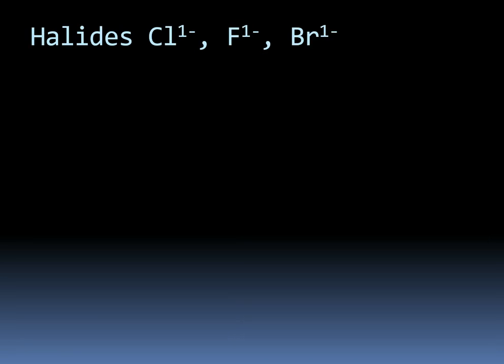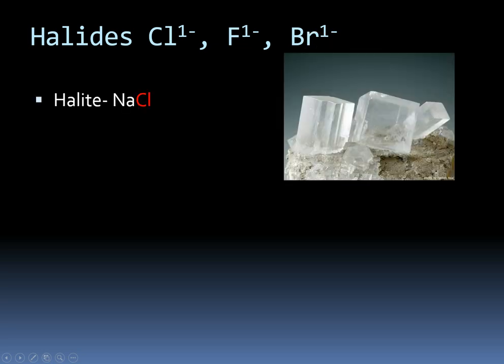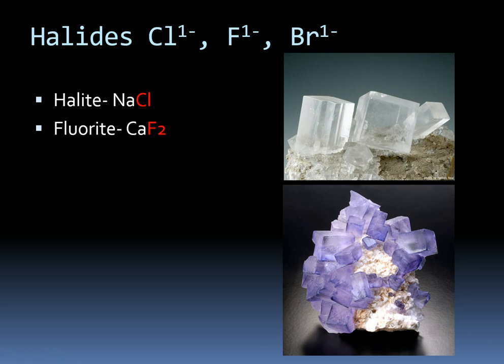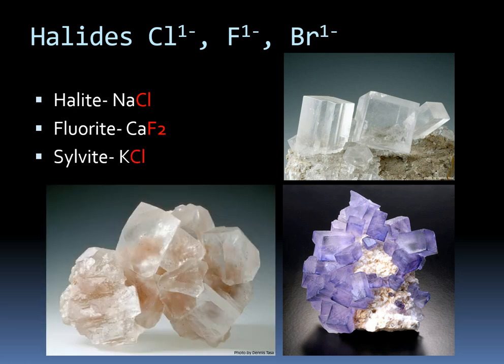We also have the halides, recognized by the presence of a halogen ion — elements like chlorine, fluorine, or bromine. Halite is sodium chloride; you can see the chlorine in there, which makes it a halide. Fluorite is a really popular collecting mineral because it comes in nice colors — purple, blue, green, teal, and sometimes colorless. We also have sylvite, which is potassium chloride, also known as bitter salt. If someone is on a low-sodium diet, potassium chloride can be used as a salt substitute — you still get that salty flavor but without the sodium.